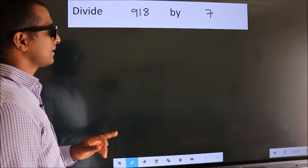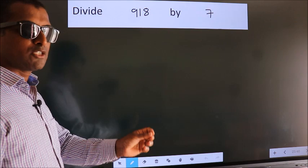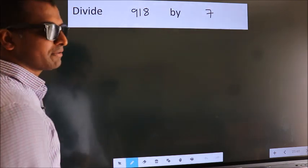Divide 918 by 7. To do this division, we should frame it in this way.